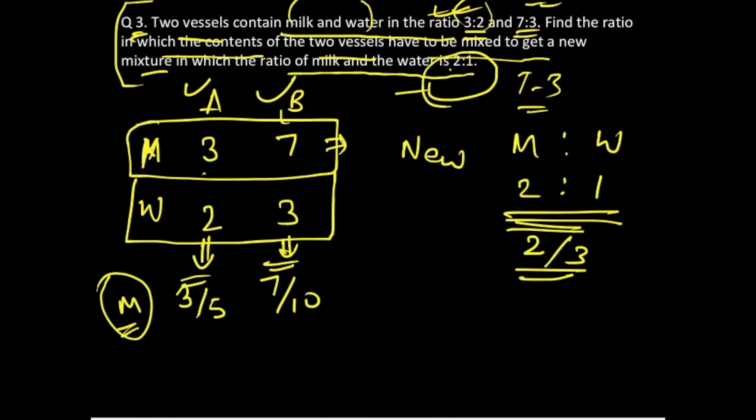Let's write them in the format of our allegation graph. We will write 3/5 over here, 7/10 over here, and after mixture what is the quantity of milk available in the mixture.